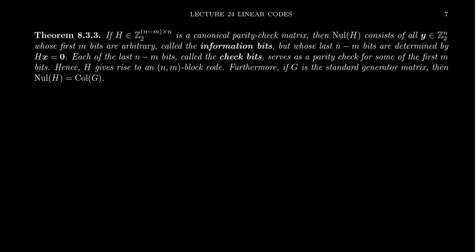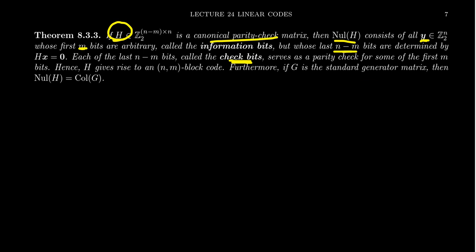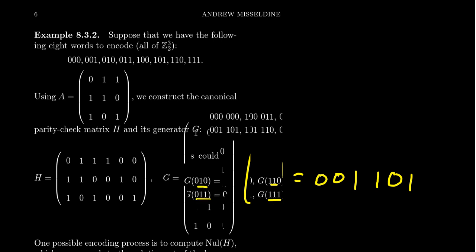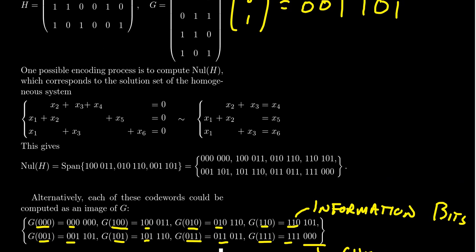There's a theorem: if H is a canonical parity check matrix, the code consists of all encoded messages where the first m bits are information bits and the last n minus m bits are check bits. An authentic code word satisfies Hx equals zero. The null space of H equals the column space of G, the standard generator matrix. Starting from H, we can create an n by m block linear code and use G to encode messages.